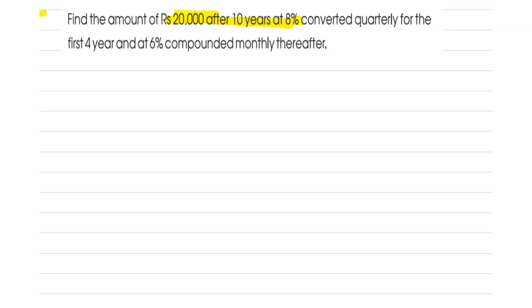Okay, so here we are splitting the 10 years into two different periods, that is one is four years and the remaining one is six years. So then at last we have to find the amount for 20,000 rupees.